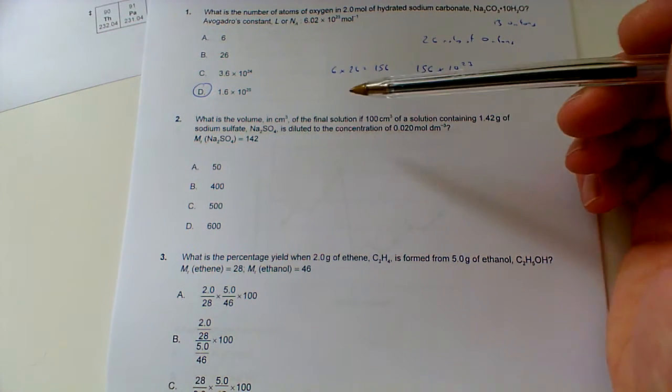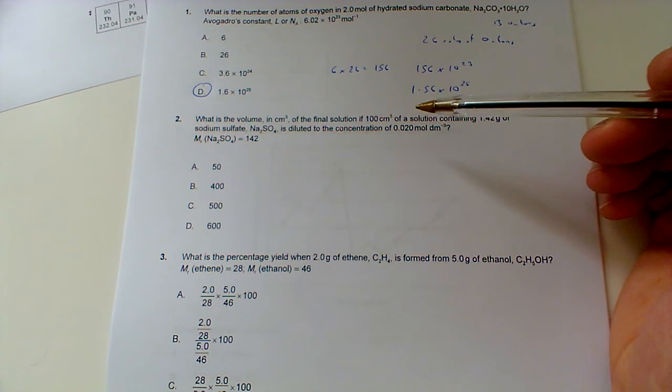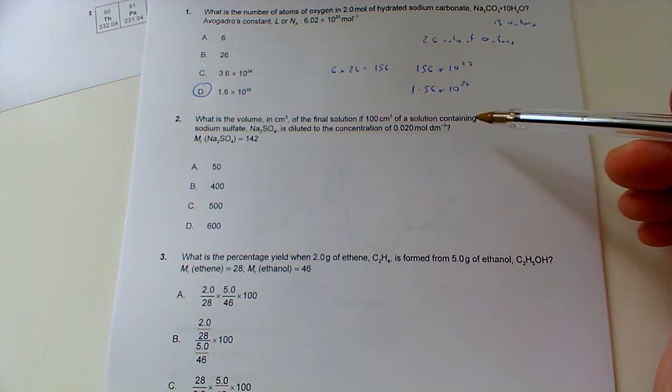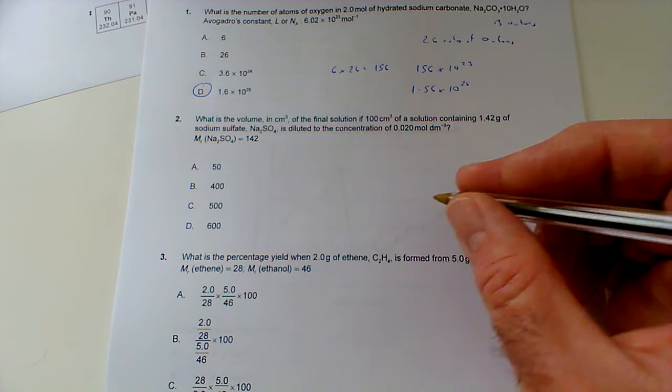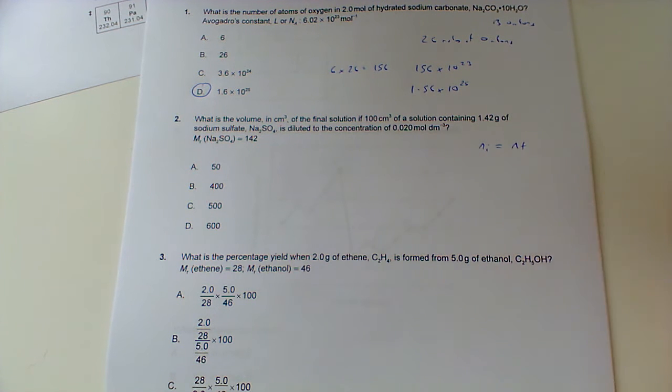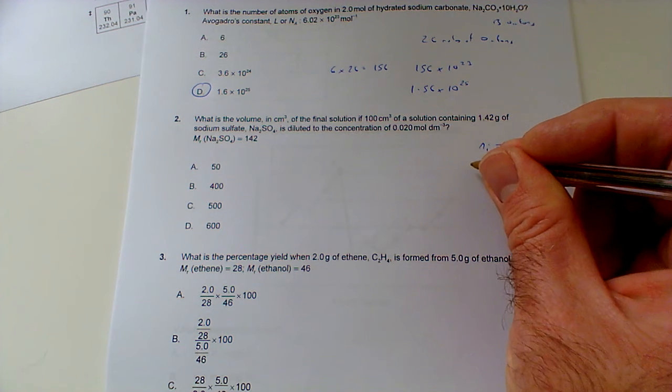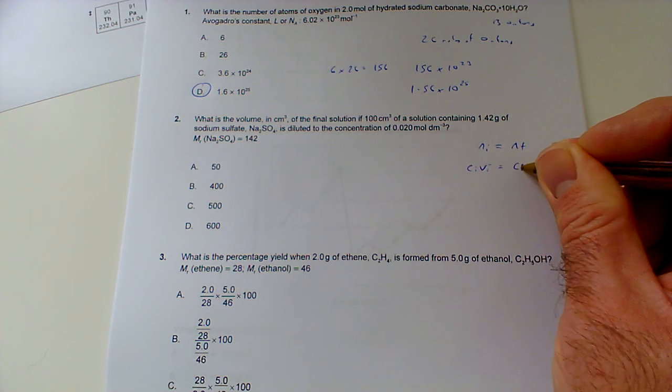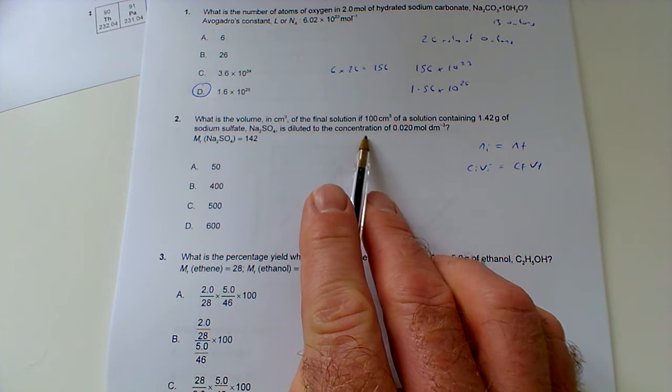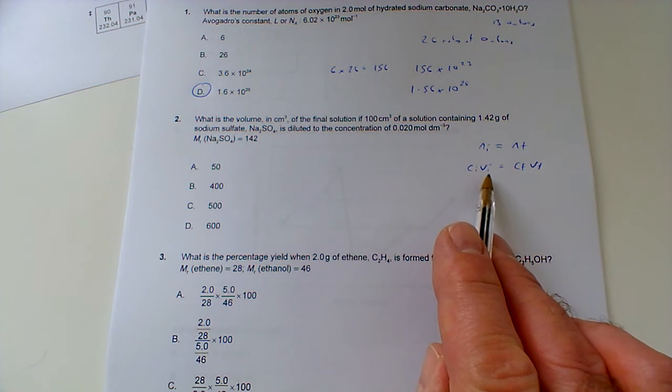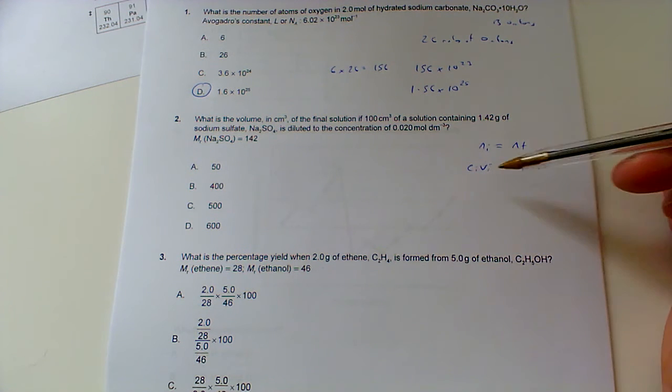Number two: what is the volume in centimeters cubed of the final solution if 100 centimeters cubed of a solution containing 1.42 grams of sodium sulfate is diluted to this concentration? Well there's a very useful expression, which is Ni equals Nf. Because basically when you dilute the solution, you don't change the number of moles of the substance, you just add in water. And then if Ni of course is Ci times Vi, then Nf will be Cf times Vf.